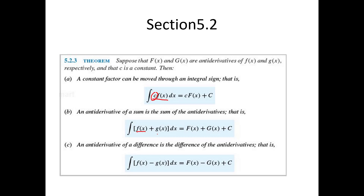Likewise, if you're ever trying to find the antiderivative of a sum of two functions, you just find the antiderivative of the first function and add it to the antiderivative of the second function. The same thing for the difference — you find the antiderivative of the first function and subtract the antiderivative of the second. So in this section we're really trying to make sure that you end up with constants times functions added with other constants times functions — sums or differences of constant times basic functions that you already know the antiderivative of.